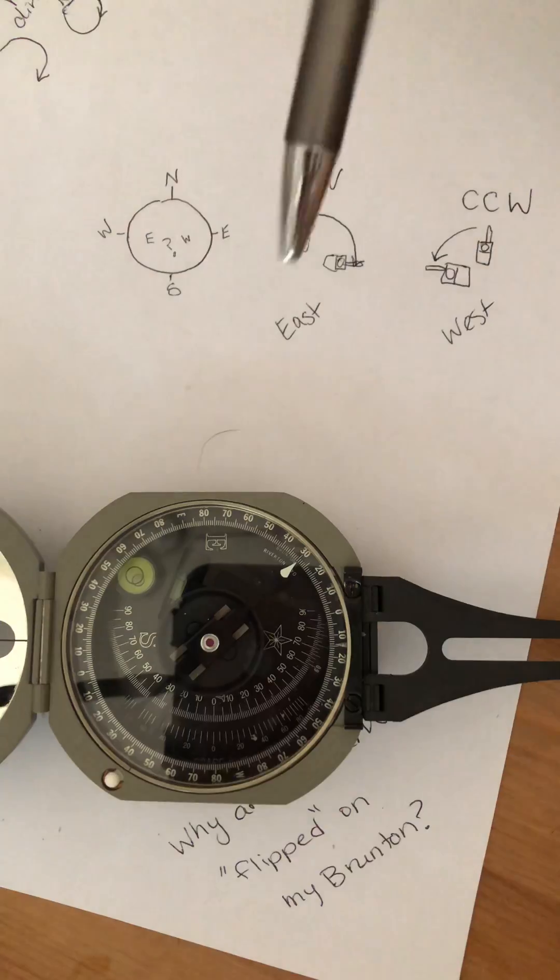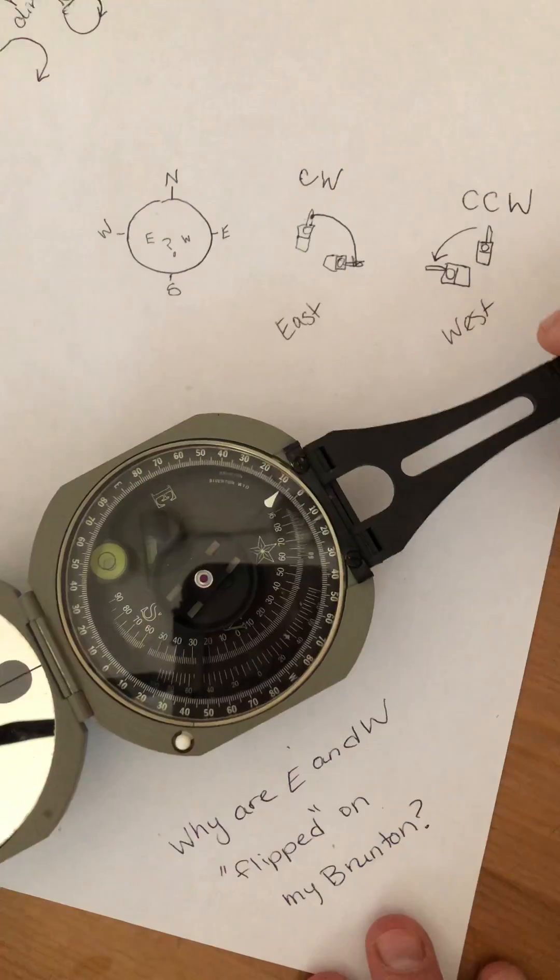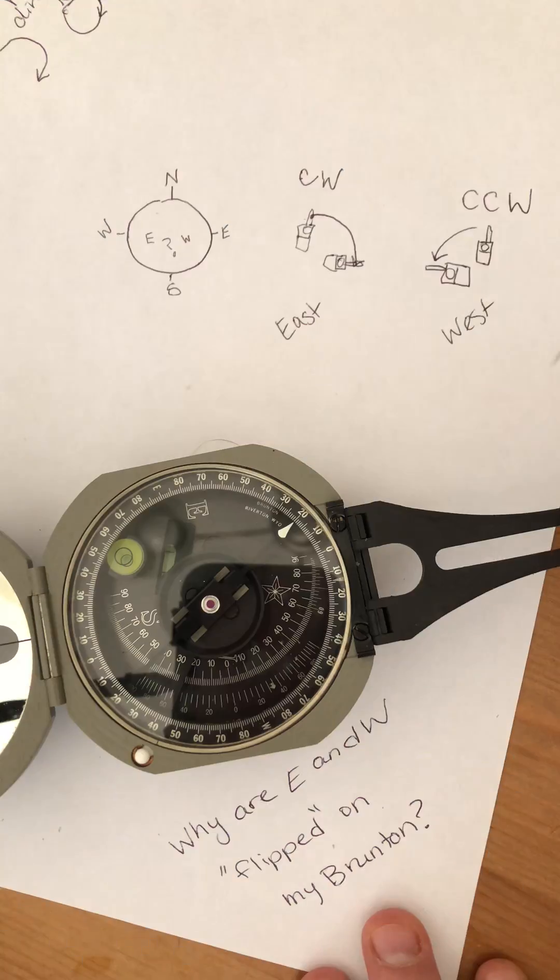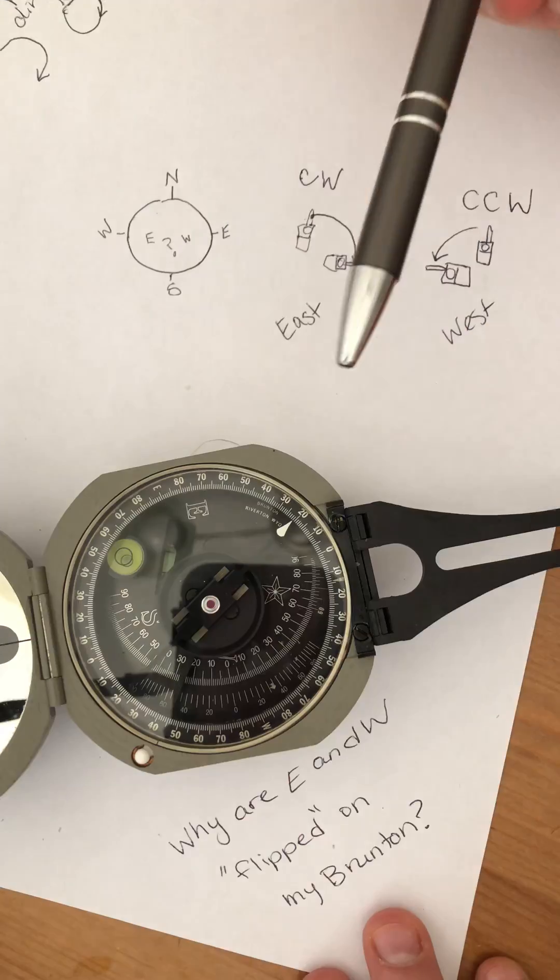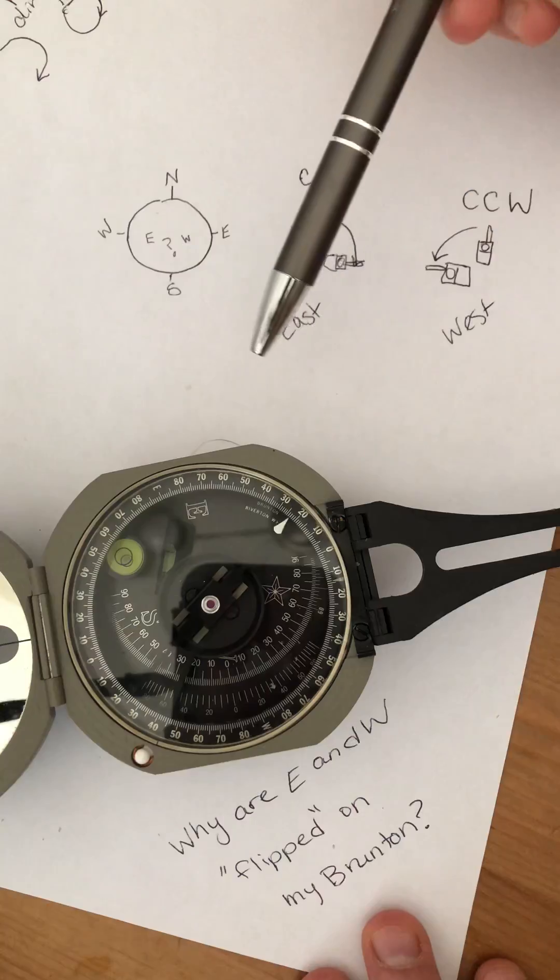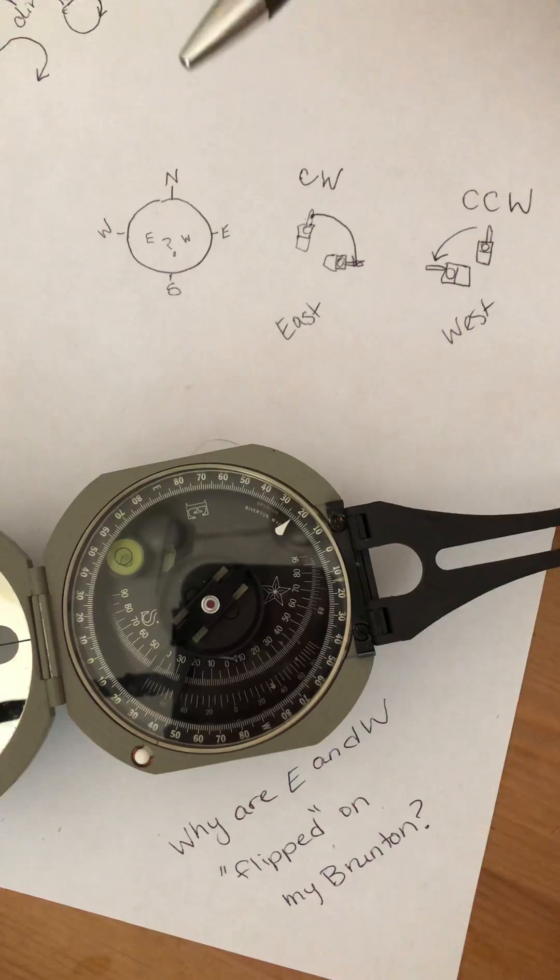So again, I rotated clockwise. So now my Brunton, my compass is pointing to the east or to the northeast. So to be able to accurately read where my compass is pointing, knowing that my needle is always going to point north, east has to now fall on the counterclockwise direction from north or to the left of north.